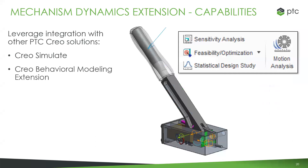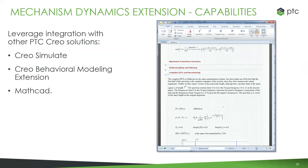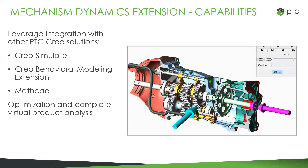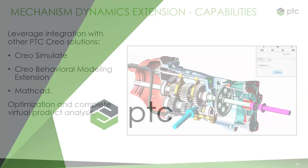It also works well with multiple other extensions like behavior modeling — if you haven't worked with that, it really helps to see, based on the forces collected, exactly how thick or thin a particular section needs to be, or how thin you can make a part while still staying within a certain factor of safety. It also works with tools like MathCAD, which is a digital engineering notebook for performing calculations and managing design intent. You can push calculations from MathCAD into mechanism, or push your results over into MathCAD to document them. Really, the goal is virtual product analysis to work toward the most optimal design.